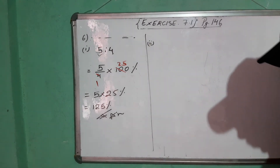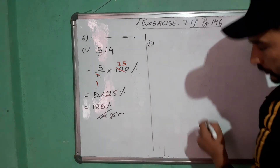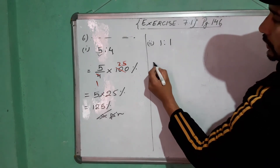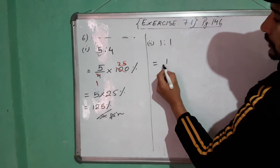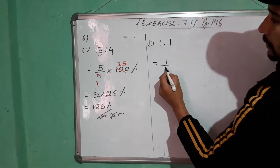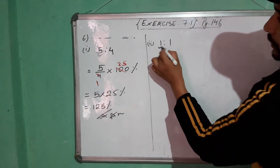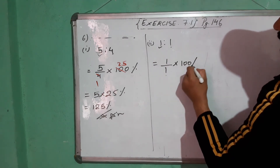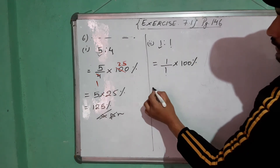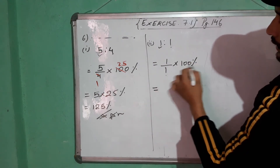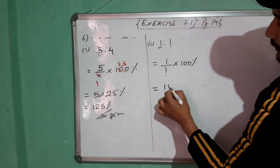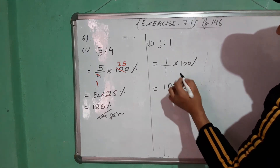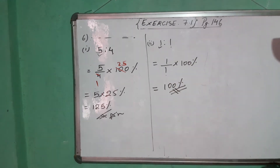Number 2: 1 is to 1. This will be 1/1 into 100%. So 1 into 100 is 100, divided by 1 is 100. Answer: 100%.